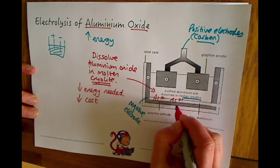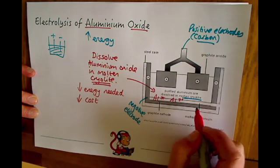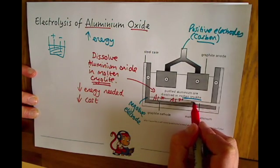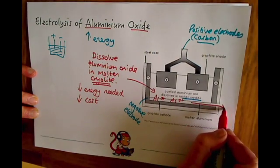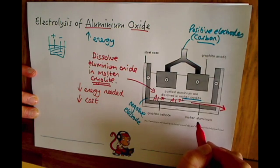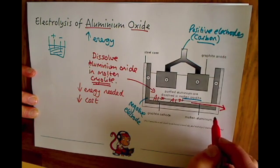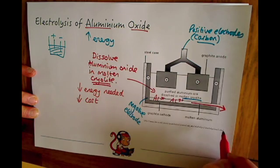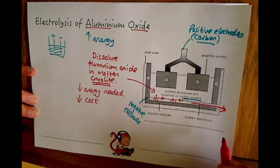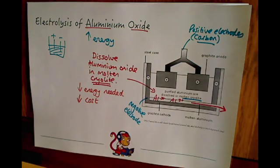Al³⁺ aluminium ions collect here, and actually it will run off out of the bottom as molten aluminium. Then you can collect it, cool it down, and use it for building aeroplanes and such.